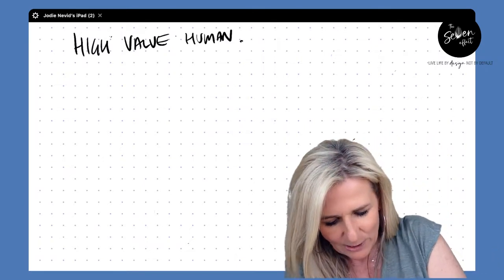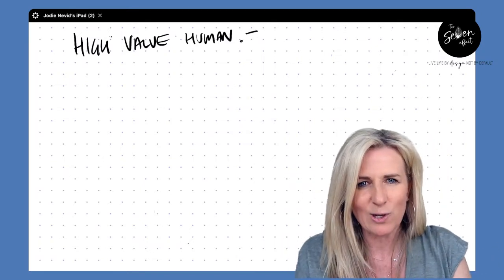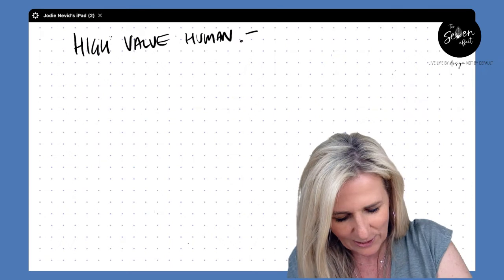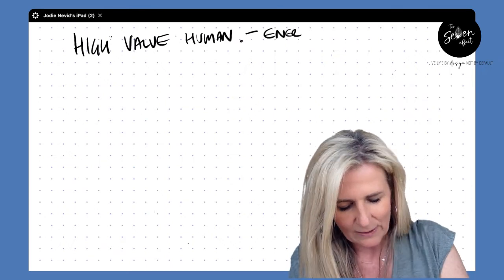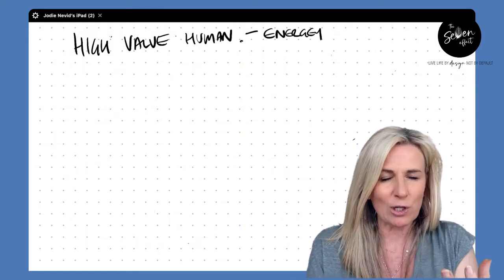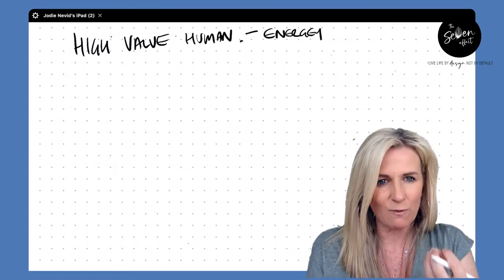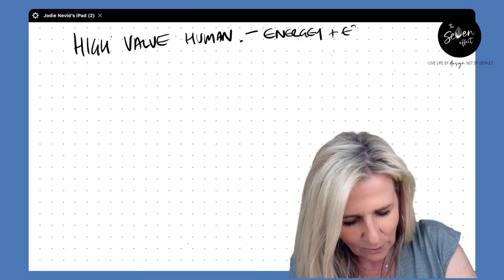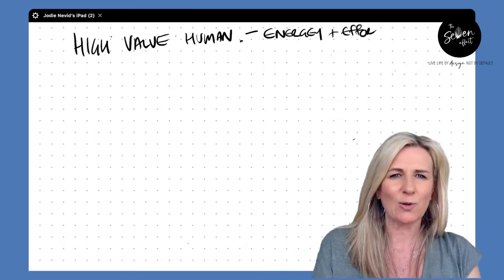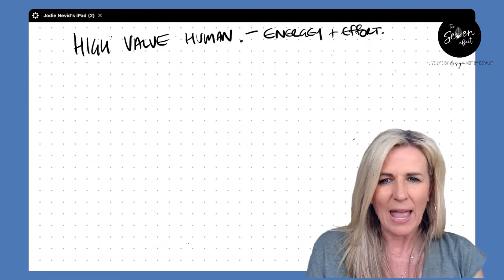And so when it comes to exploring the high value human matrix, there are two continuums that we'll look at. There's the energy, which is how much you contribute, the energy that you give or take from any situation, and the effort required by you to produce that energy. And here's the thing,